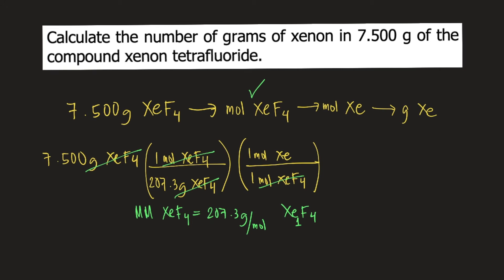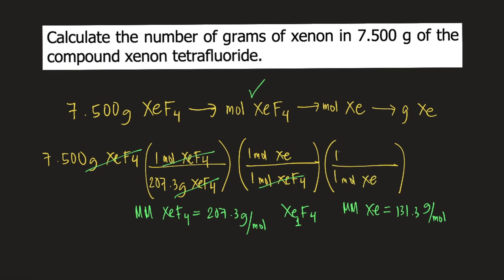Finally, to convert moles of xenon to grams of xenon, we use the molar mass of xenon, which is 131.3 grams per mole. So 1 mole of xenon weighs 131.3 grams. We place this so that moles of xenon cancel, and our final unit is grams of xenon.